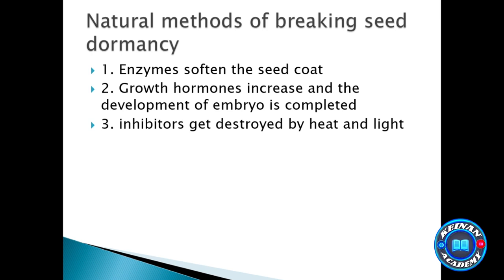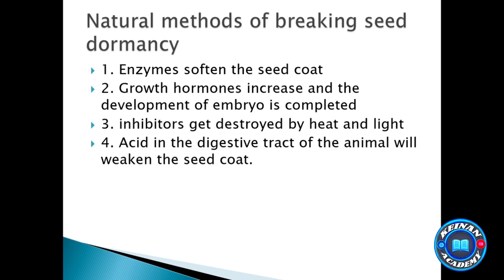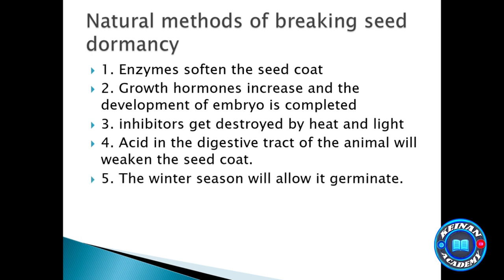Another natural way of breaking dormancy is through acid. The digestive tract of an animal contains acid that will crack or cut the seed coat, allowing the seed to germinate easily when it passes out of the animal. Additionally, the natural change of seasons can break dormancy — if a seed germinates in a certain season, when that season arrives, it will start germinating.